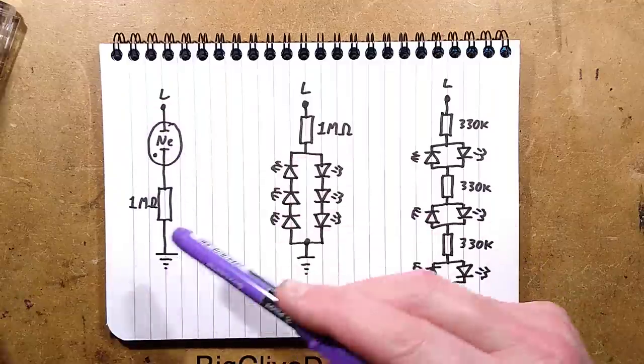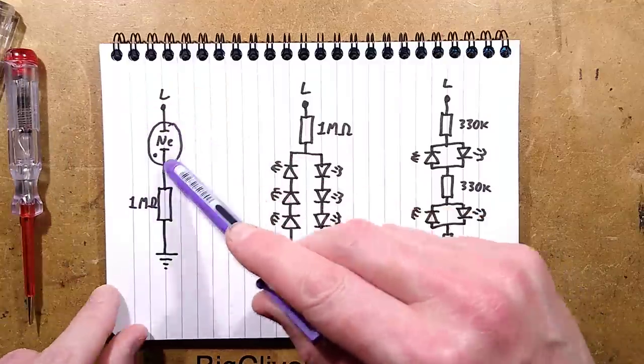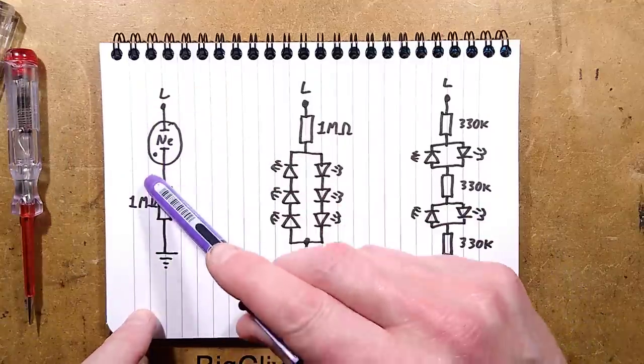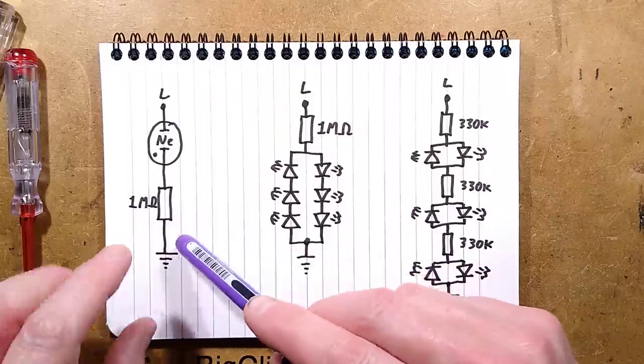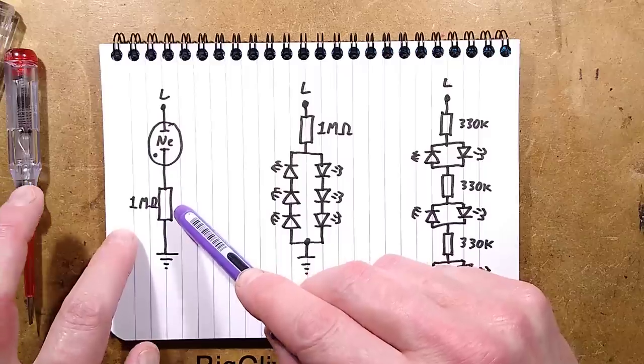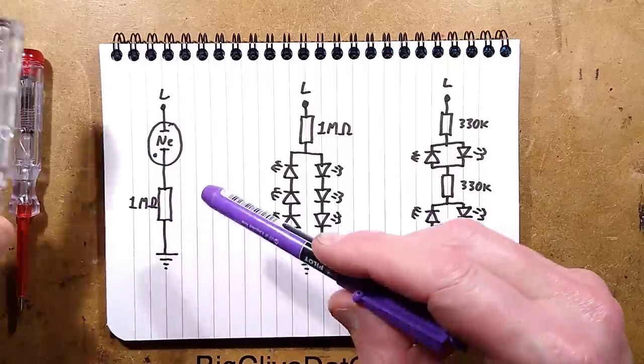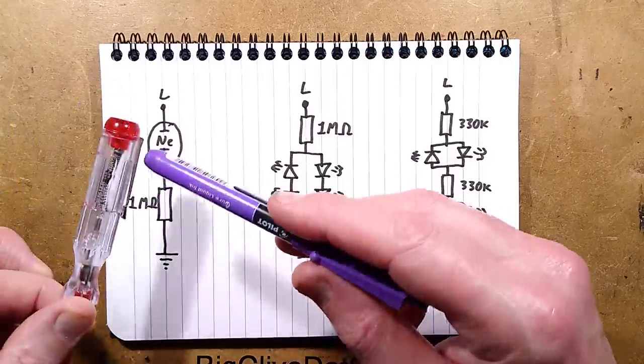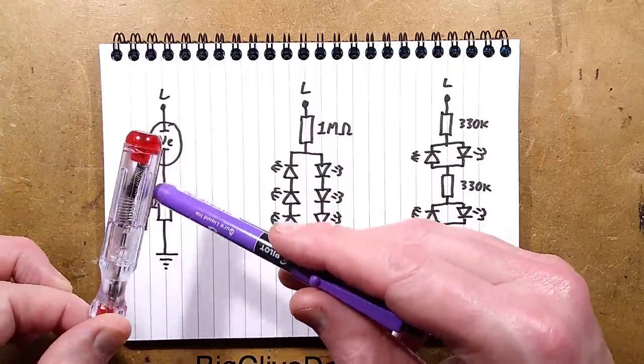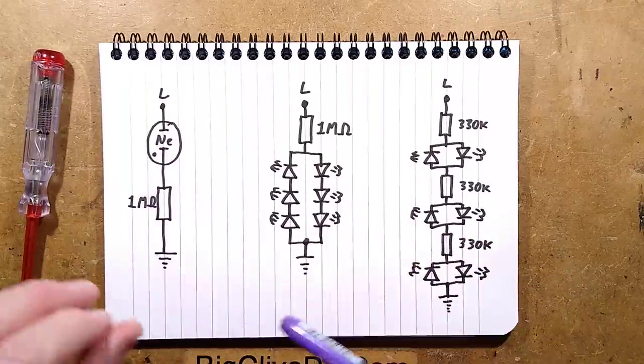So the classic neon screwdriver, that's this one, has the neon indicator lamp and the 1M resistor. The cheap Chinese ones use a really inadequate 1M resistor. The proper ones like this one, I'll show you the inside, have a proper really high separation resistor for safety reasons.